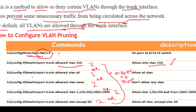The second rule is: switchport trunk allowed VLAN all — meaning all VLANs are allowed through the trunk interface. The third rule is: switchport trunk allowed VLAN none — meaning no VLAN is allowed through the trunk interface. The fourth rule allows a specific list of VLANs. The fifth rule: switchport trunk allowed VLAN except 50 — meaning all VLANs are allowed except VLAN 50.